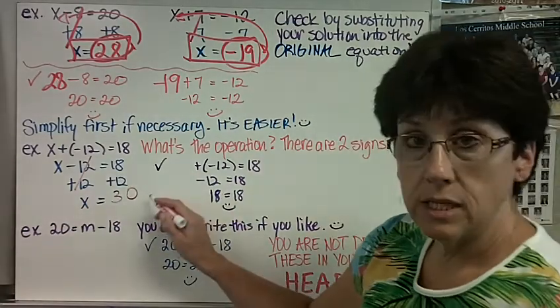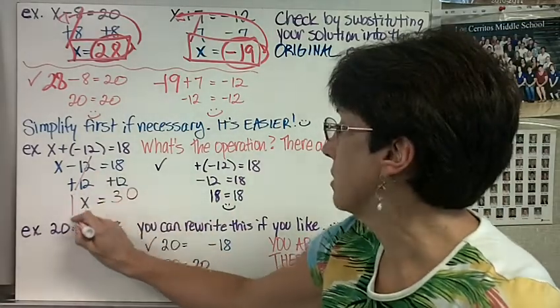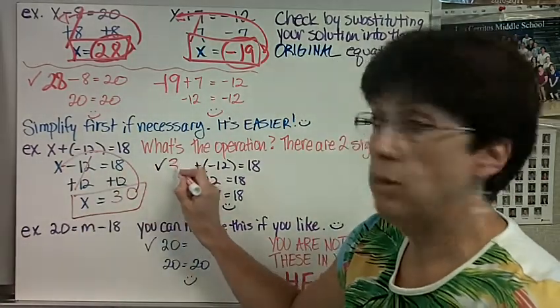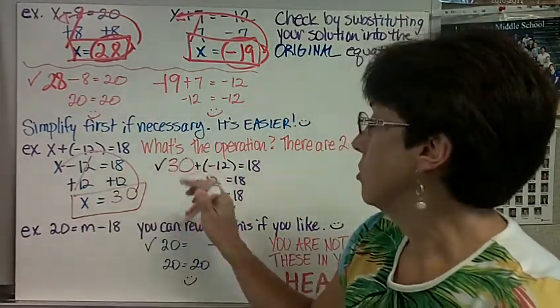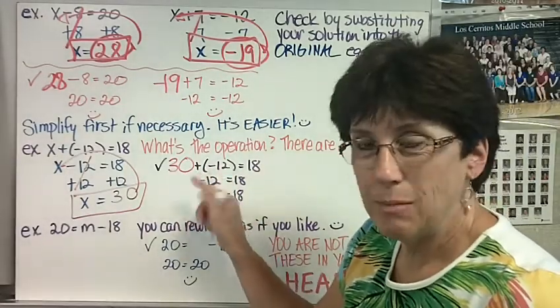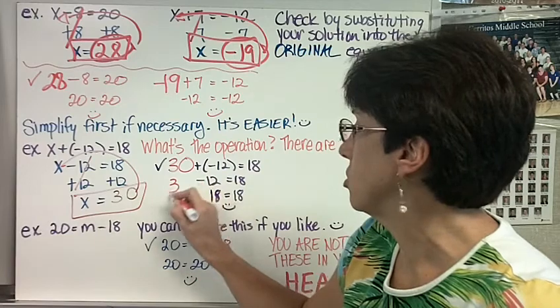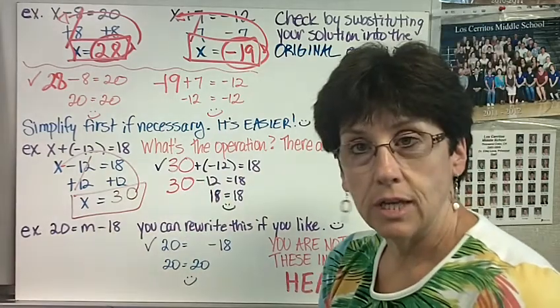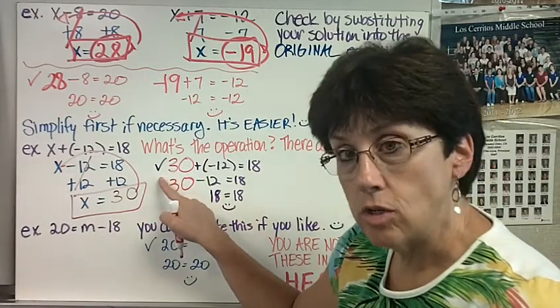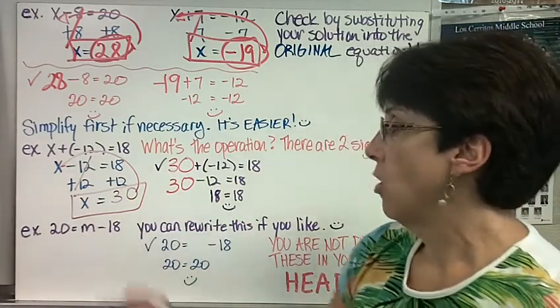And now to check this, I plug it in. Box it. I plug it in to my original x here. So I rewrote my problem already. So I have 30 plus negative 12 equals 18. And I don't like this double sign. So I'm going to rewrite it so it's just 30 minus 12 equals 18. And 30 minus 12 is 18. So I'm happy. Notice I put the little check mark to show that it's a check.